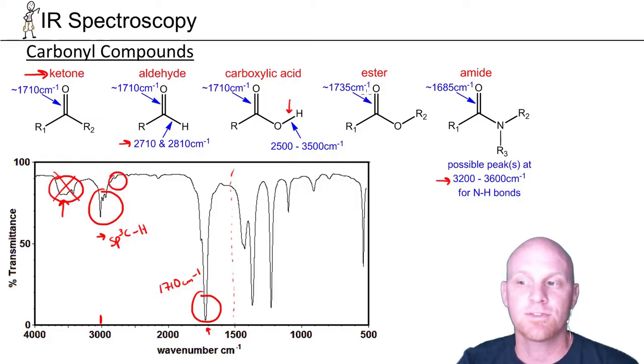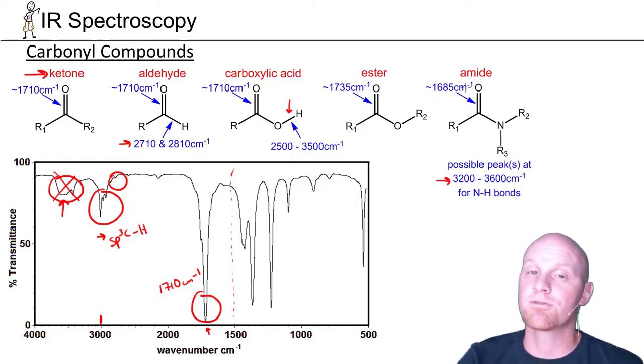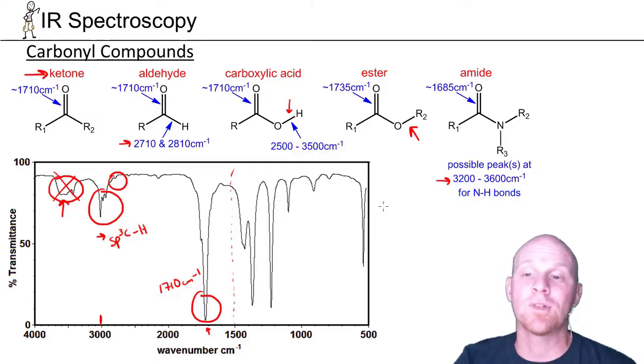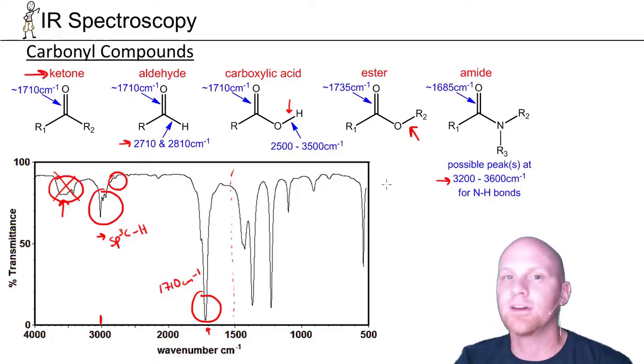Had it been closer to 1750, we might have thought ester. Had it been below 1700, maybe we would have thought amide. We can't really for sure say it's a ketone, but there's a good likelihood this probably is a ketone. Some people point out for an ester that the carbon-oxygen single bond shows up in the fingerprint region. I don't like that because most compounds have a lot of stuff in the fingerprint region. We're going to loosely say it's probably a ketone.